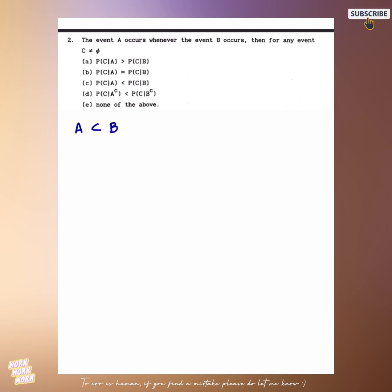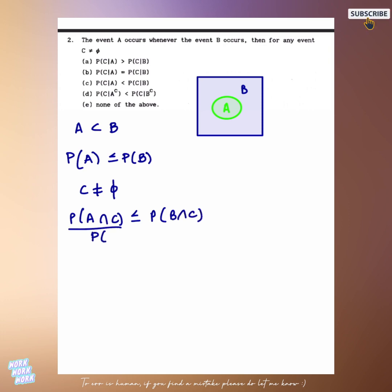Next we have been given A occurs whenever the event B occurs, which means that probability of A is less than equal to probability of B, because A is a subset of B. And C is not equal to a null event. I simply consider probability A intersection C which will be less than equal to probability B intersection C. On dividing it by probability A we find.